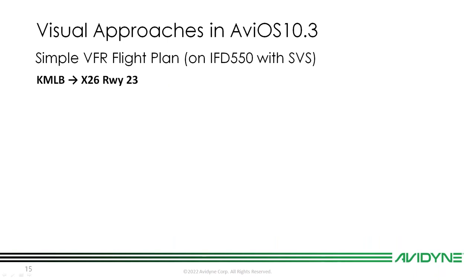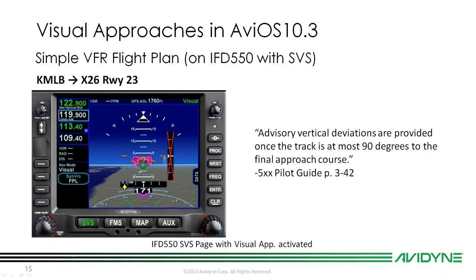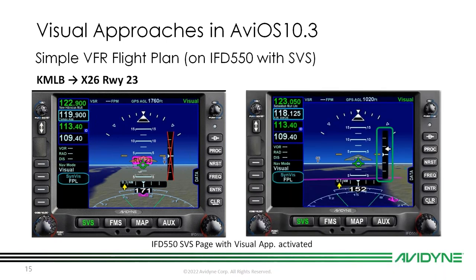On the IFD 550 with the SVS button, flying KMLB to X26 runway 23, you'll get a VDI (vertical deviation indication) on the SVS page. Per the pilot guide, vertical deviations are provided once your track is at most 90 degrees to the final approach course. If you activate a visual and are far out from runway 23, you'll see big red X's on your VDI until you get within 90 degrees of that final approach course — at which point the VDI comes alive with your vertical guidance.